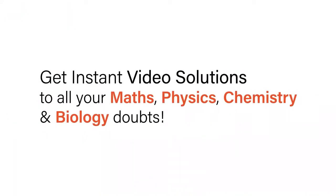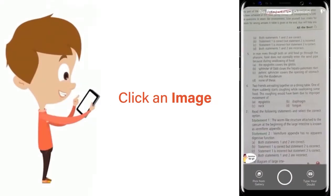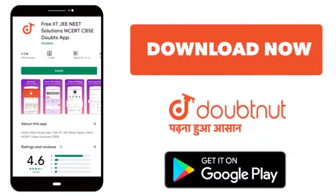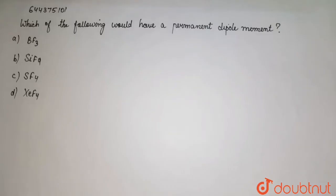With Doubtnet, get instant video solutions to all your maths, physics, chemistry and biology doubts. Just click the image of the question, crop the question and get instant video solution. Download Doubtnet app today. So which of the following would have a permanent dipole moment?